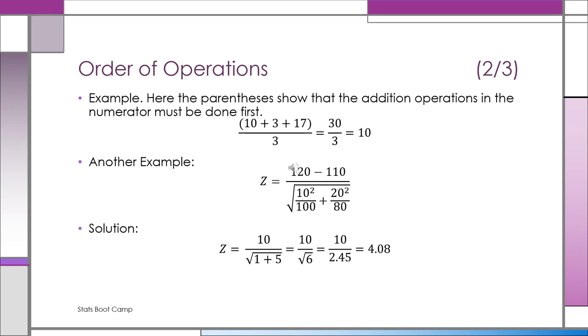So here's an example of how we do this. The first example at the top is just a simple average of three numbers: 10 plus 3 plus 17. Add that up, divide by 3. You get 30 over 3 or 10.